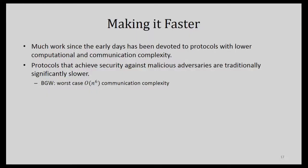The BGW protocol is pretty slow. It's polynomial, which for computer scientists is good enough — but in the real world it's not really practical. In the worst case, when you've got bad guys and have to compensate for them, you can get up to n to the sixth communication complexity per gate in the circuit, which is bad. Different ways people have worked to make these protocols faster include having a function-independent pre-processing stage.